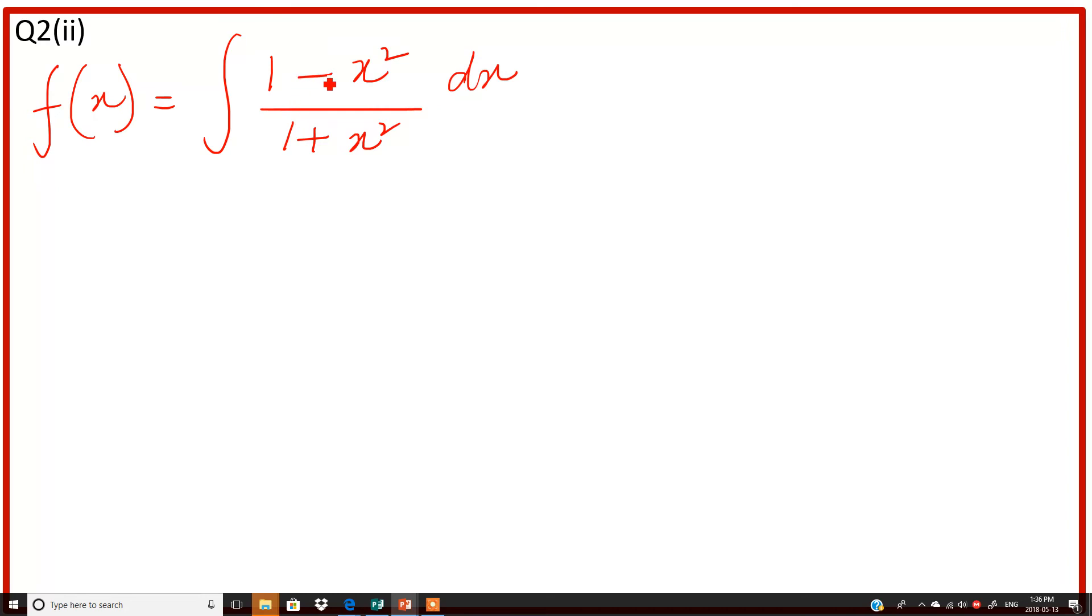Here we have (1 - x²) divided by (1 + x²). We have the same variable and same exponent in both numerator and denominator.